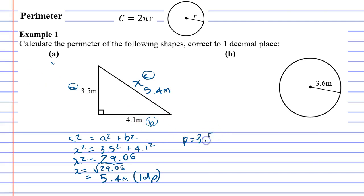So we're just going to go 3.5 plus 4.1 plus 5.4. 3.5 plus 4.1 plus 5.4 gives us 13, and we have to do it to one decimal place, so we'll say 13.0 meters. Okay, so that's the perimeter of the triangle.